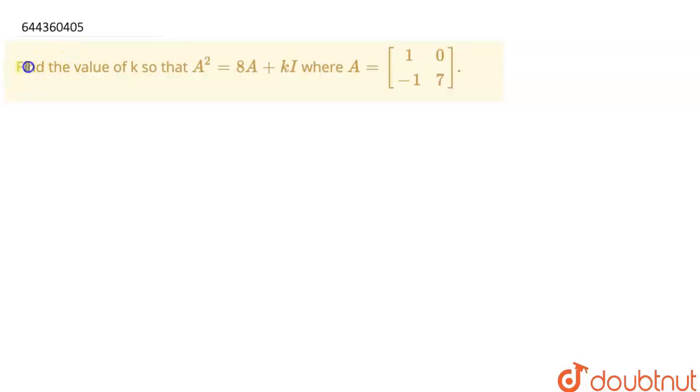Hello my dear students, the given question is find the value of k so that A² = 8A + kI where A is the matrix [1, 0, -1, 7].